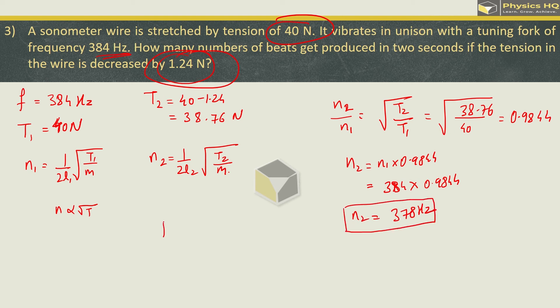How many beats will come? Beats are nothing but difference in frequency. n1 minus n2, which is 384 minus 378, gives 6 beats. But these beats are per second. We need to find out the number of beats produced in 2 seconds. So beats in 2 seconds will be 2 into 6, which is equal to 12.